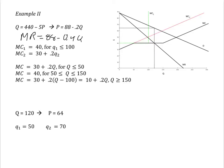we have 88 minus 0.4Q is equal to 40, or 48 is equal to 0.4Q, implies Q equals 48 over 0.4 equals 120.